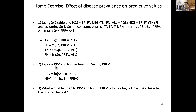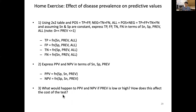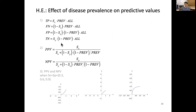Consider the positive and negative predictive values in terms of sensitivity, specificity, and disease prevalence. The third question is: what would happen to your predictive values if prevalence is very low or very high, and how does this affect the cost of your test? Take some time to work through it — here is the answer for you.